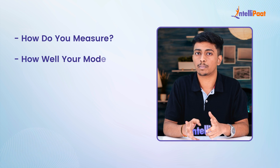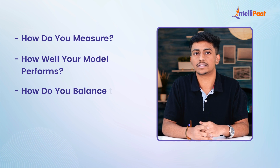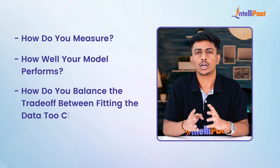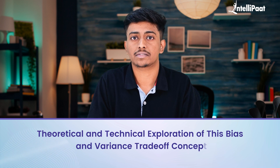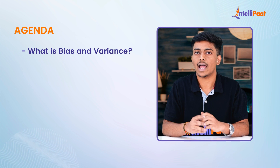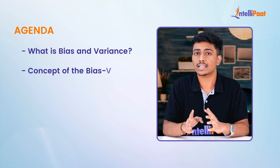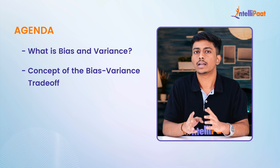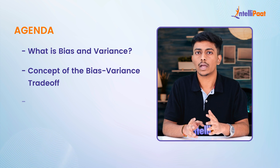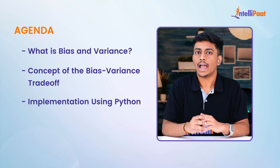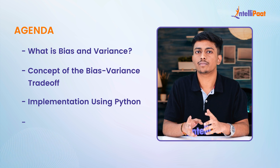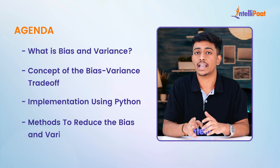But how do you measure how well your model performs and how do you balance the trade-off between fitting the data too closely or too loosely? Today in this video we are going to do a thorough theoretical and technical exploration of the bias and variance trade-off concept. We will start with what is bias and variance, then understand the concept with diagrams and implement it using Python, and finally look into methods to reduce the bias and variance trade-off.